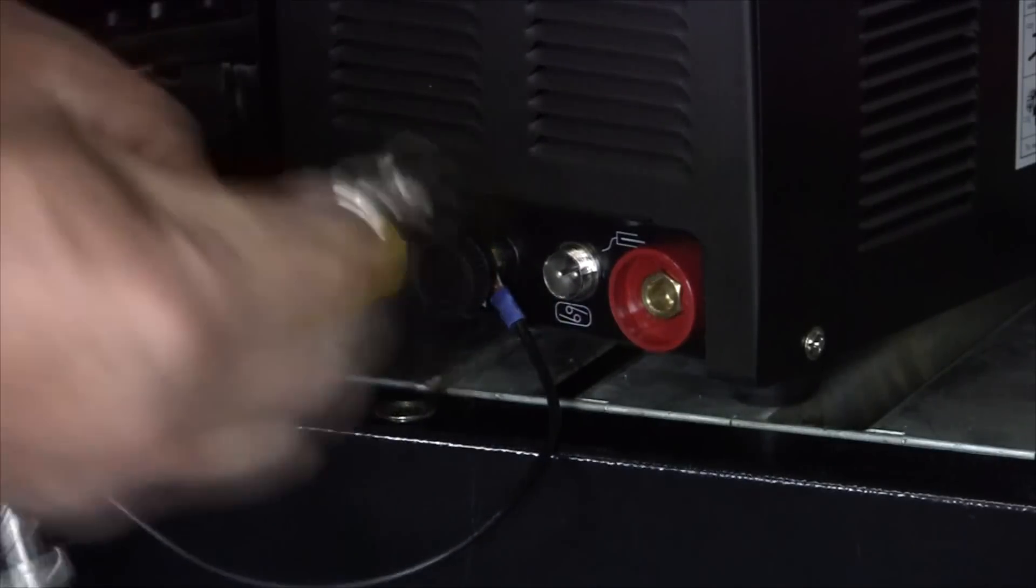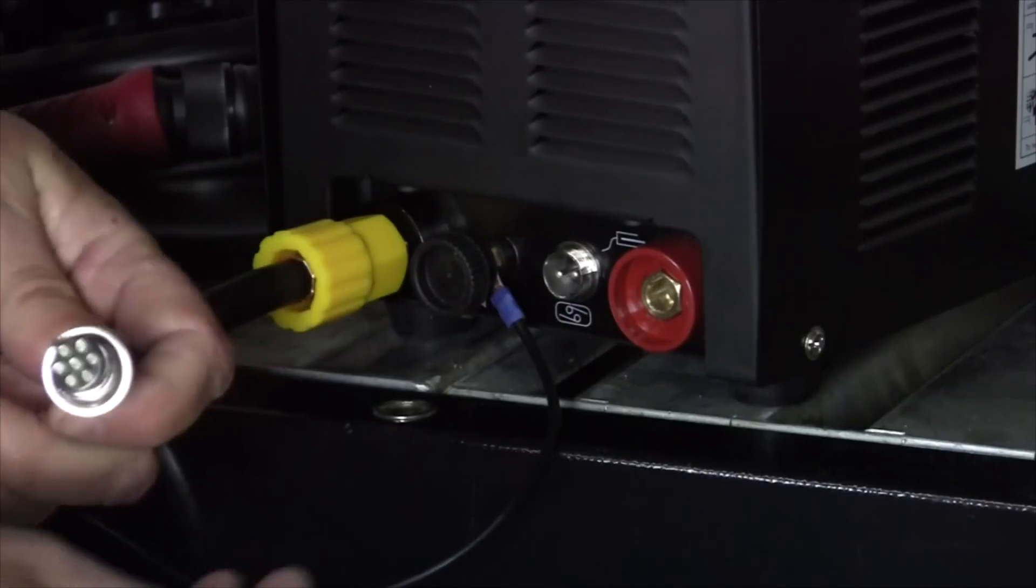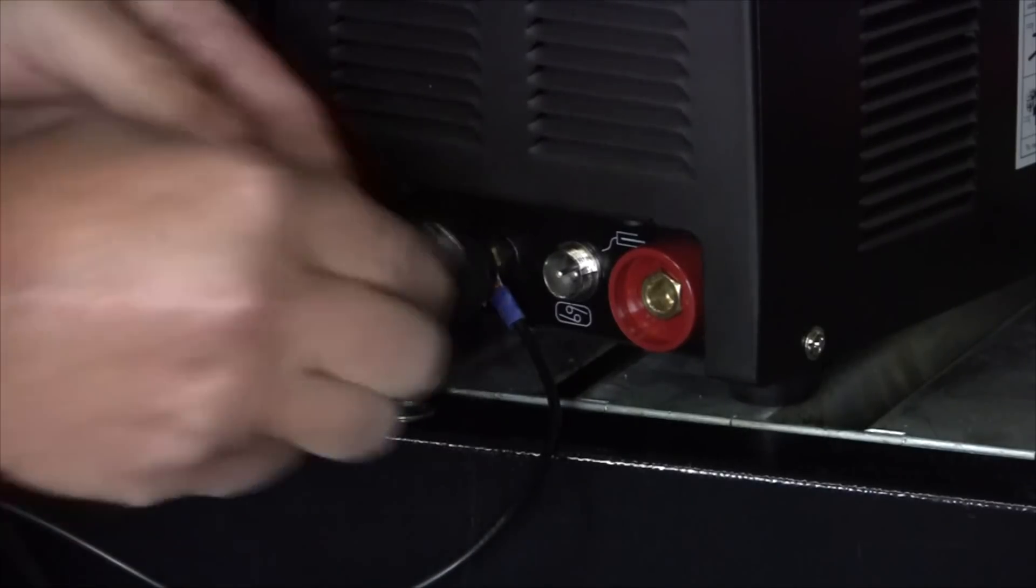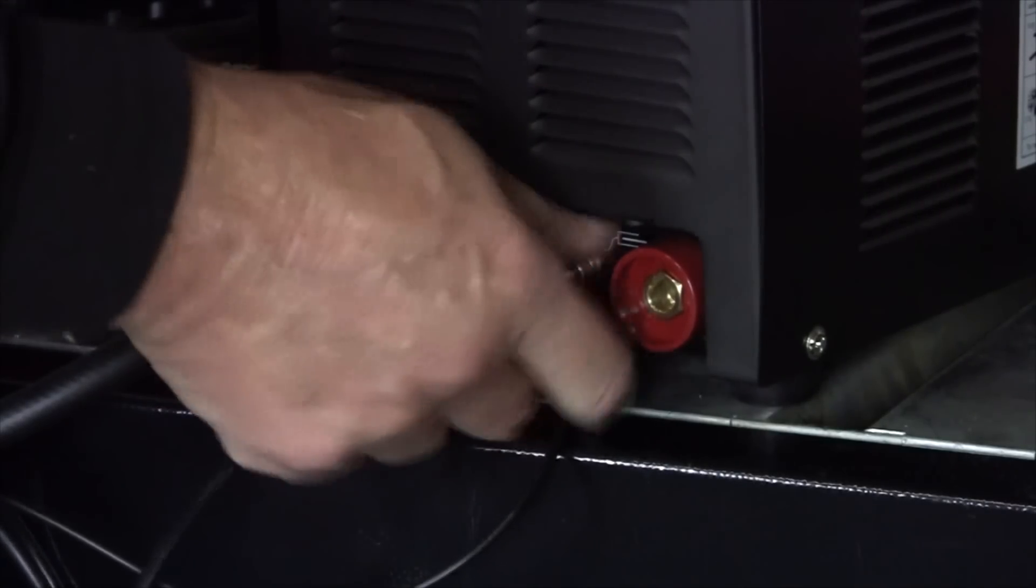And our two pin connector. It comes with an additional seven pin connector but it's not used on this machine. So our two pin connector has a little guide slot. Locate that, slide it in until it seats and screw the collar down.